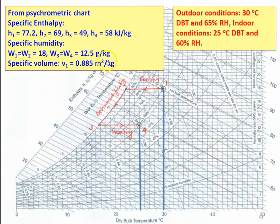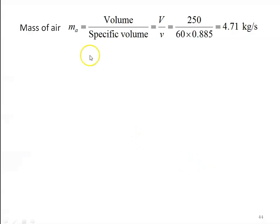The properties collected from the psychrometric chart are: H1 = 77.2 kJ/kg, H2 = 69 kJ/kg, H3 = 49 kJ/kg, H4 = 58 kJ/kg. The specific volume of air at the inlet condition (point 1) is 0.885 m³/kg. The mass of air equals volume divided by specific volume: 250 m³/min divided by 60 (to convert to per second), divided by 0.885, giving a mass flow of 4.71 kg/s.